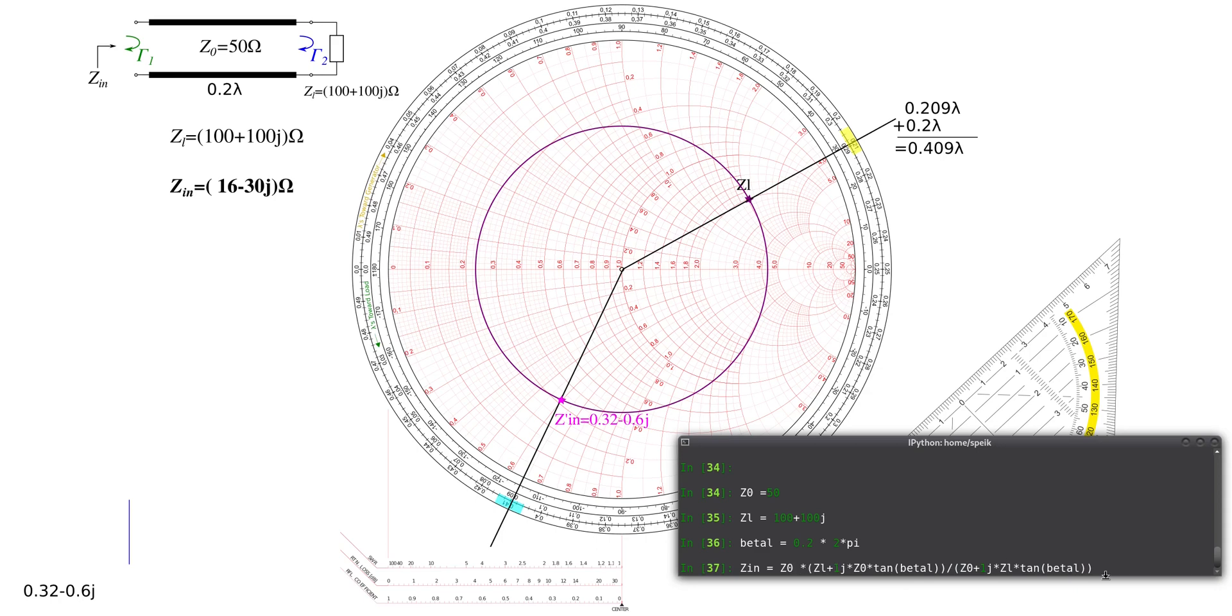Z_0 times, and then this big fraction. That's the formula you find in the lecture notes and in the formula sheet. And when you do that, I hopefully get my Z_in, which is 16.2 minus 29.8 ohms. And we see from the Smith chart, we are very, very close to that solution.